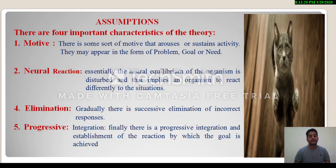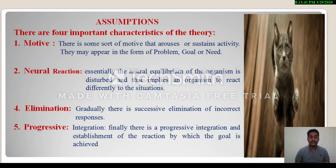Third point is elimination. Gradually there is successive elimination of incorrect responses. According to Thorndike, when any stimulus is motive-oriented in the context of an individual or organism, initially due to neural equilibrium disturbance, it performs random and meaningless activities. But as it repeats its efforts and trials, it gradually eliminates useless and meaningless responses and integrates meaningful responses.